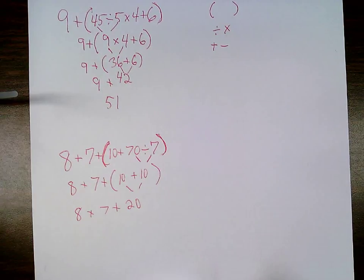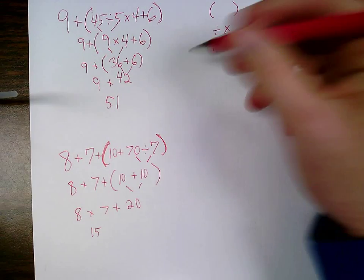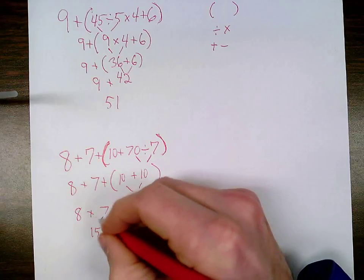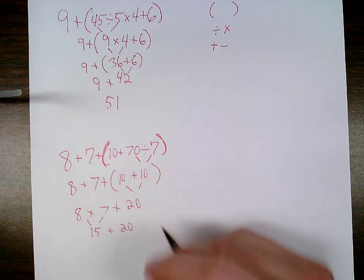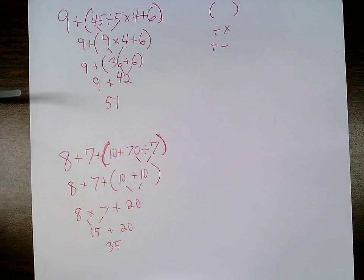8 plus 7 is 15 because now I'm just doing my addition from left to right. Bring that down. 15 plus 20 is 35, so 35 is my answer.